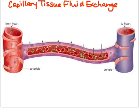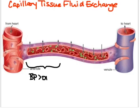Just to orient you to this diagram, here we have the arterial and here we have the venule. In describing this piece of the capillary bed, we would describe this section as the arterial end and this section as the venule end. On the arterial end of the capillary bed, blood pressure is greater than osmotic pressure, and because of this pressure differential, substances diffuse out of the capillary bed into the ECF.